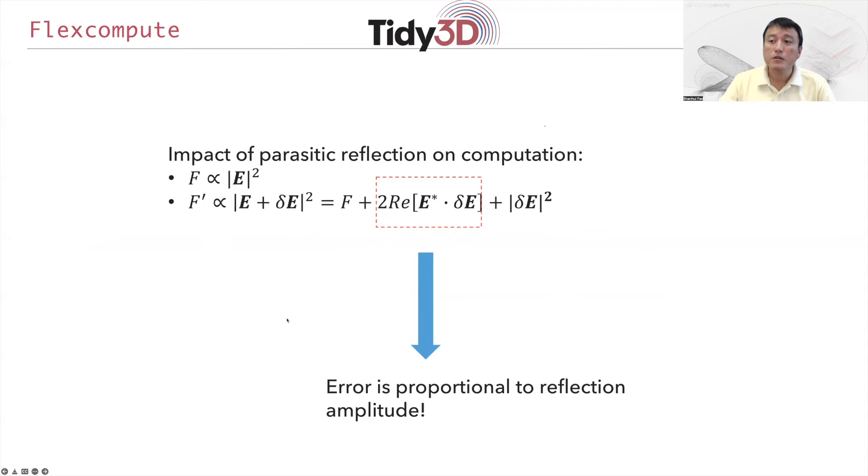Having introduced the concept of PML, I think it will be useful to talk a little bit about how reflection or these parasitic reflections from the boundary influence the quality of your computational simulation. Typically when you talk about these simulations, you are typically interested in, for example, intensity transmission coefficient or intensity reflection coefficient. In other words, the desired quantity that you usually care about scales as the field absolute value squared.